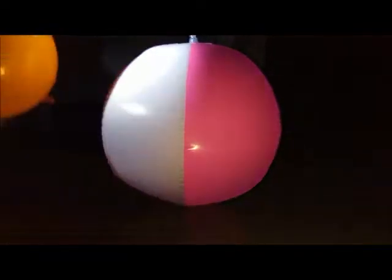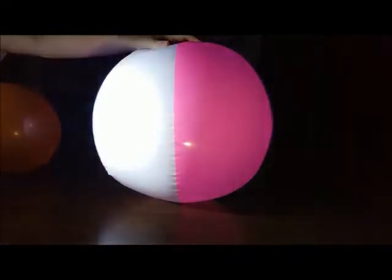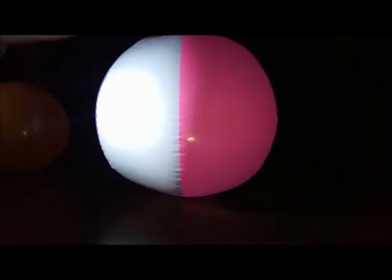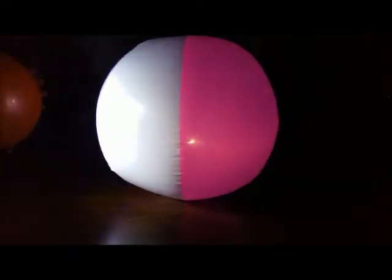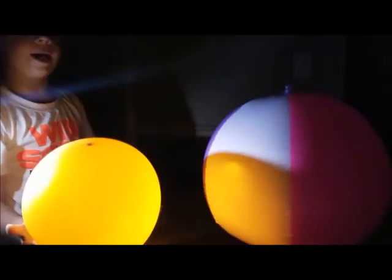All right, we are going to hold the ball so that it is directly in between the flashlight and the large ball. So take the small ball and put it in between the flashlight. Yeah, there we go. All right, see how it's causing a shadow on there.